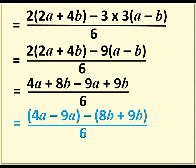To simplify, we have 4A minus 9A giving us negative 5A, and 8B plus 9B also gives us 17B.